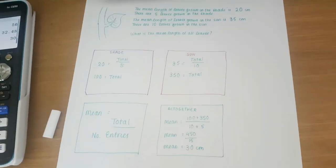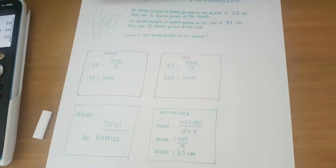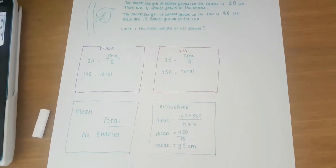This problem can work in any context as long as we can work backwards to find the total overall, we can find the mean all together.